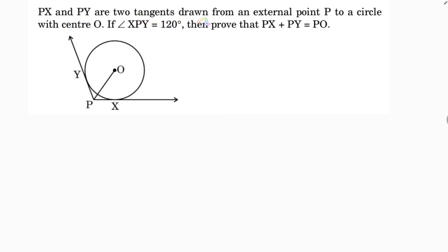Px and Py are two tangents drawn from an external point P to a circle with center O. If angle XPY is 120 degrees, we need to prove that Px plus Py equals Po. I will join O by radius to the points of contact X and Y. The angle at the point of contact is 90 degrees.